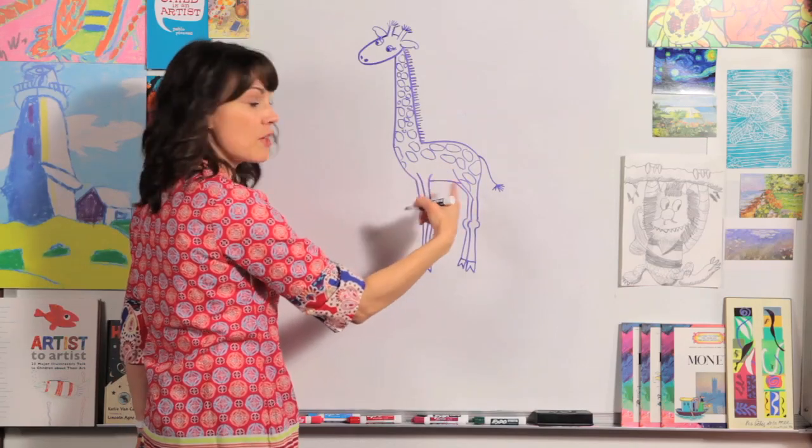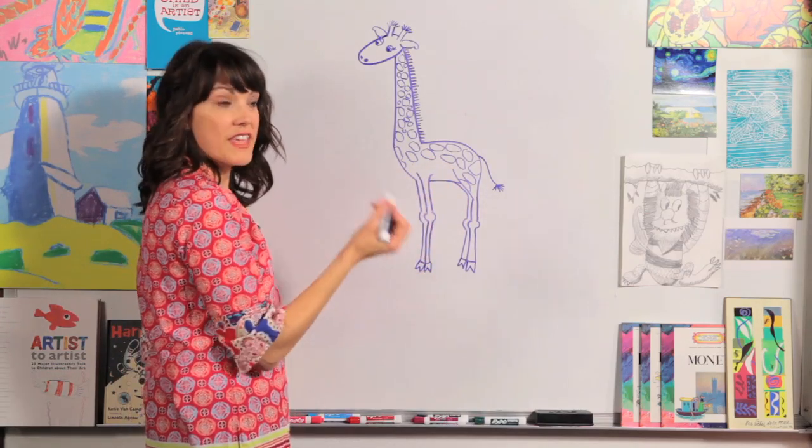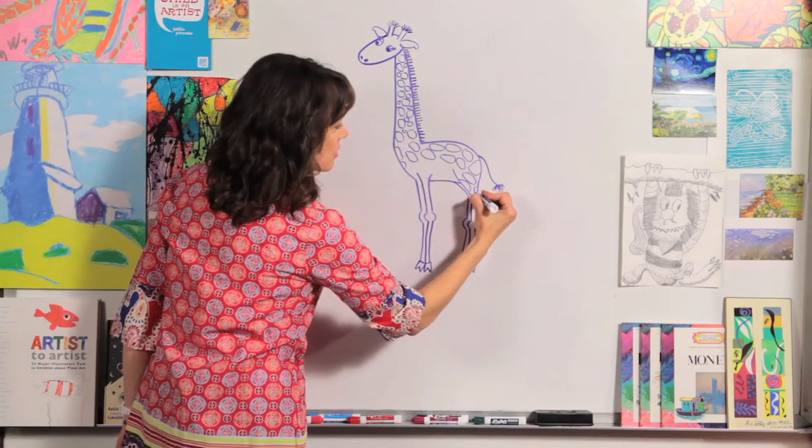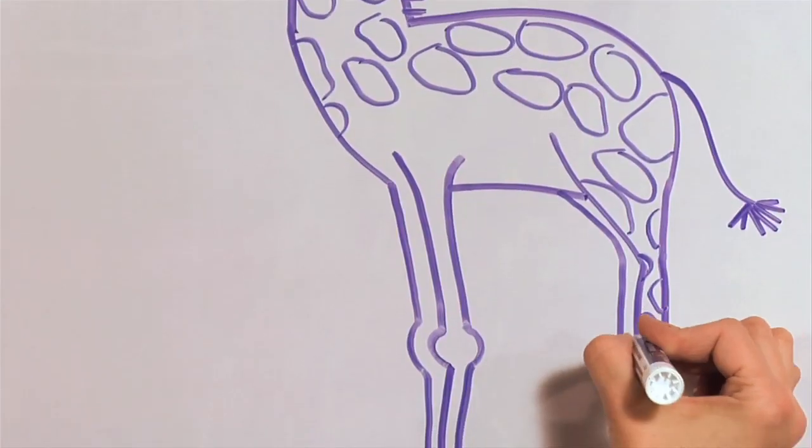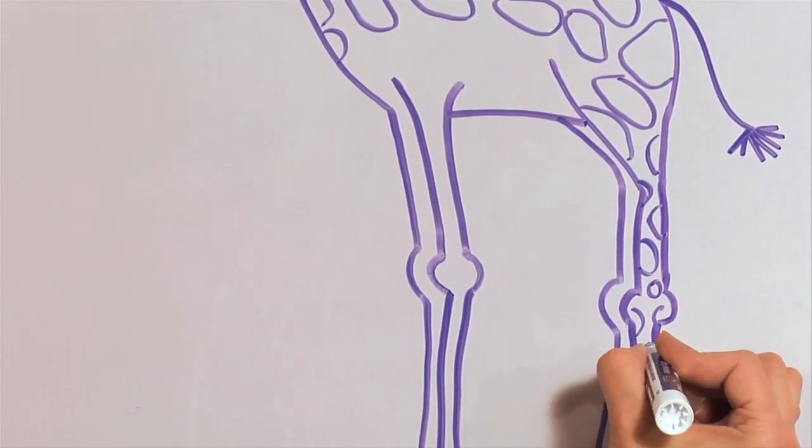And you don't really need to do them on his tummy. And then as you do the legs, they can get smaller again, like the neck. So as you go down, you can make them a little bit smaller.